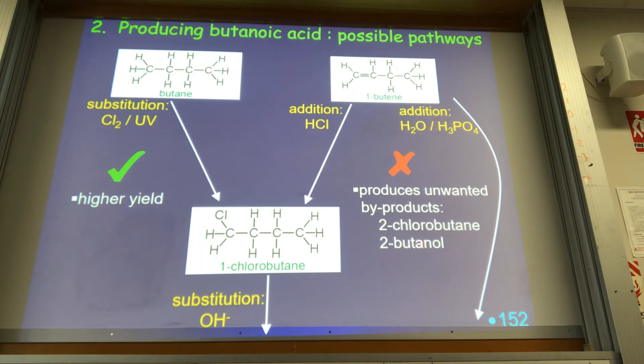Now in this case, the proportion of unwanted products that you get - 2-butanol in the case of the direct addition, and 2-chlorobutane in the case of the addition with HCl - most of the product produced is those undesirable byproducts. So you're wasting huge amounts of your reactants. With the substitution reaction, you actually get a higher proportion of the product being 1-chlorobutane. So in this particular case, the substitution with chlorine is actually the preferred pathway. You get the highest yield.